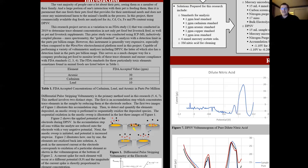However, these instruments are generally very expensive, especially when compared to a system such as the WaveNow electrochemical platform used in this project, capable of performing a variety of voltammetric analyses, including DPSV, the latter of which also has a detection limit in the parts per billion range. This serves as a cheaper way for a company producing pet food to monitor levels of these trace elements and ensure compliance with FDA standards.